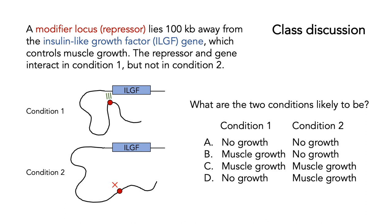Here's a class discussion. We have an example of a modifier locus — specifically a repressor — that lies 100 kilobases away from the insulin-like growth factor, the ILGF gene. This insulin-like growth factor gene controls muscle growth. The repressor and the gene interact in condition one but not in condition two. What are the two conditions likely to be? Have a think about what you think the answer might be — stop the video, and when you think you've got the answer, restart the video and we'll see what the answer is.